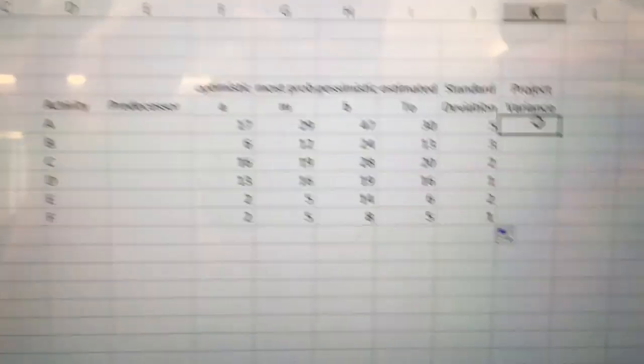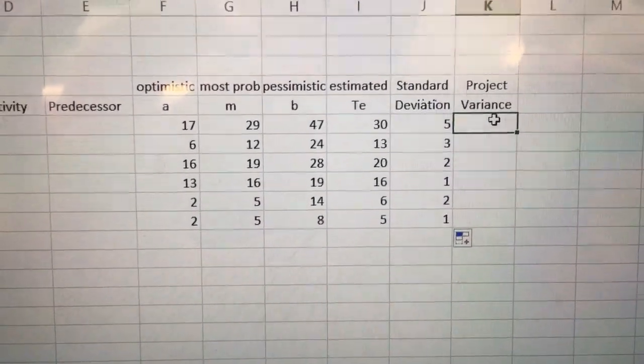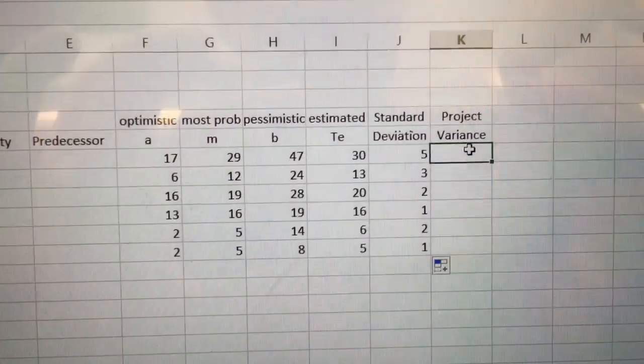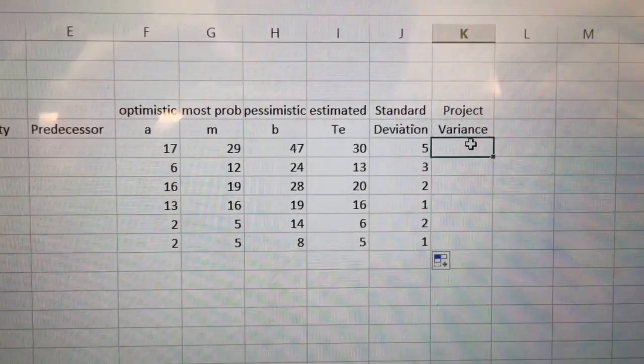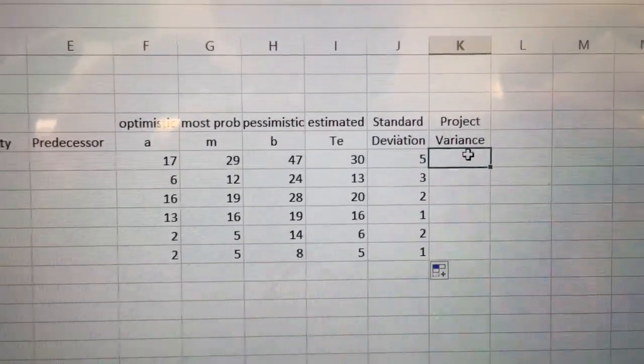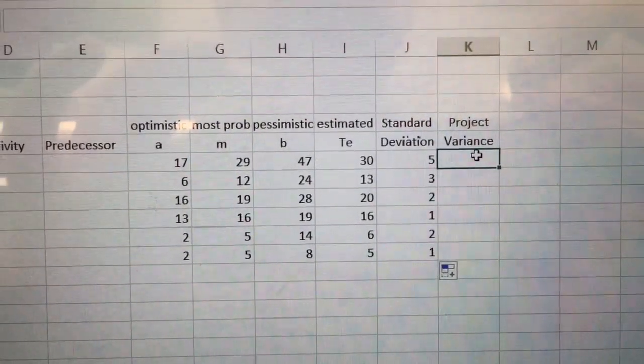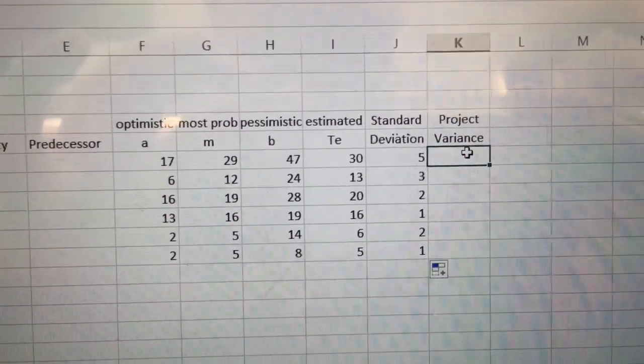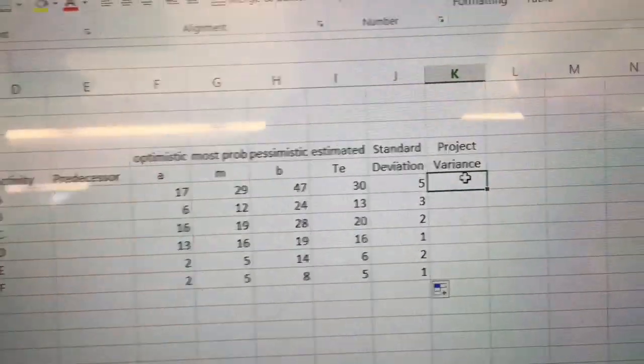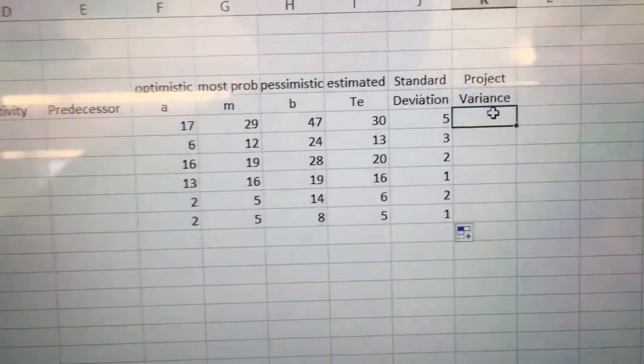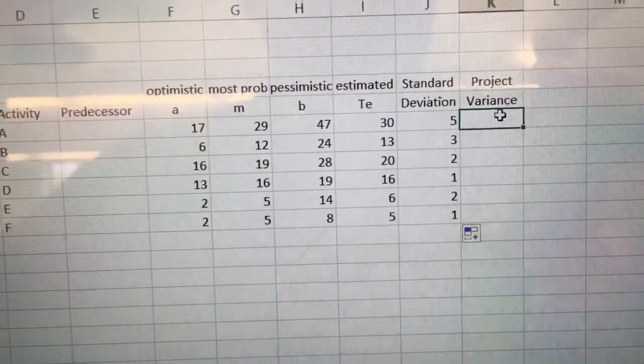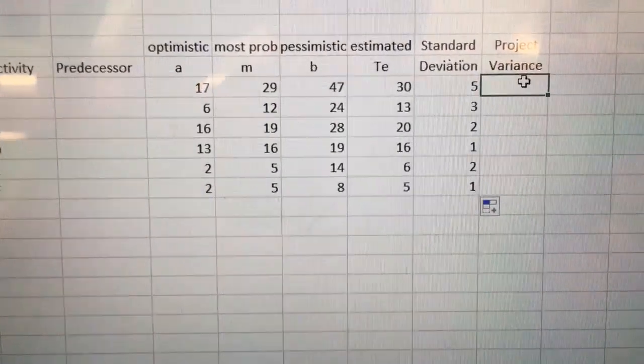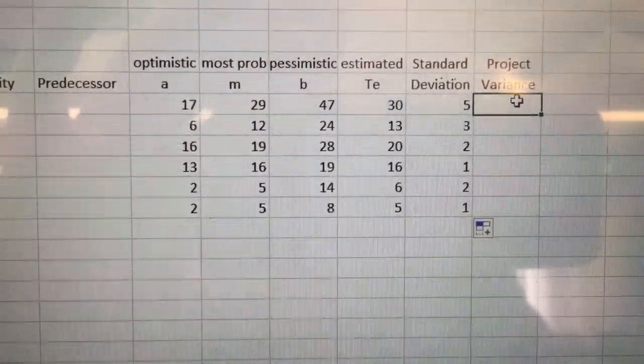Project variance. To get my project variance I'm going to take the sum of the critical path items. Actually the sum of the critical path standard deviations. Well make it even more complicated. I'm going to take the sum, well the square root of the sum, of the standard of the, scratch that part. I'm going to take the square root of the sum of the standard deviation squared for the critical path. Doesn't make sense, stick with me. Basically let's do it one step at a time.